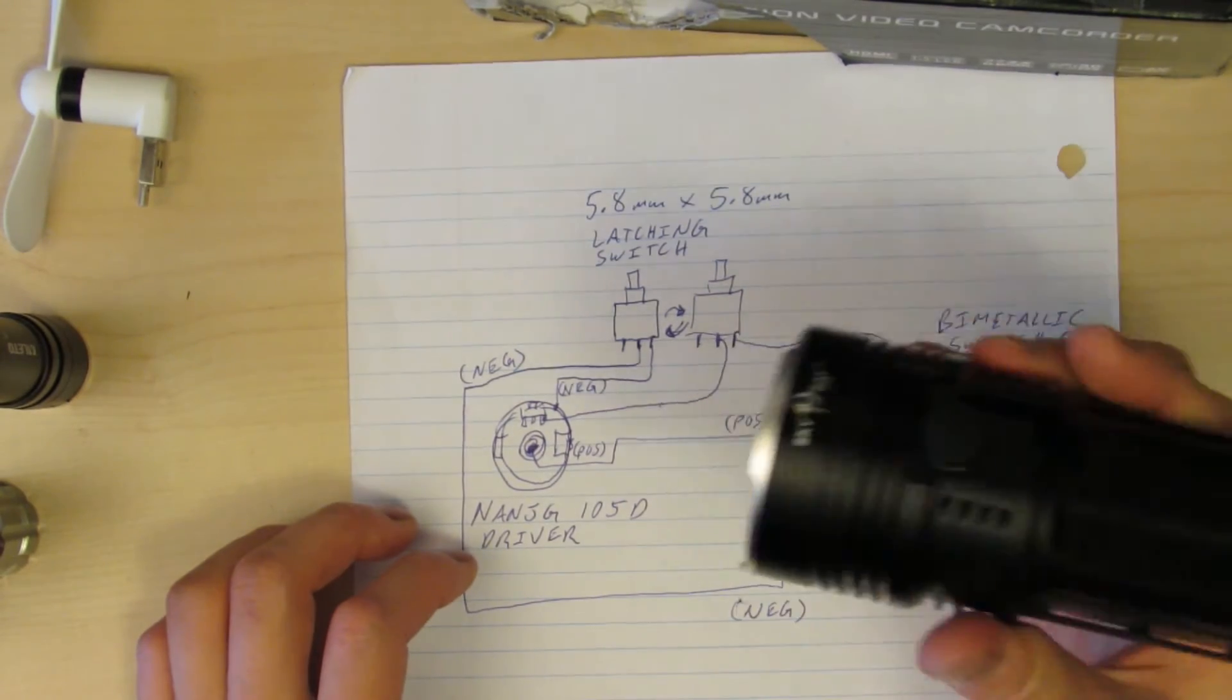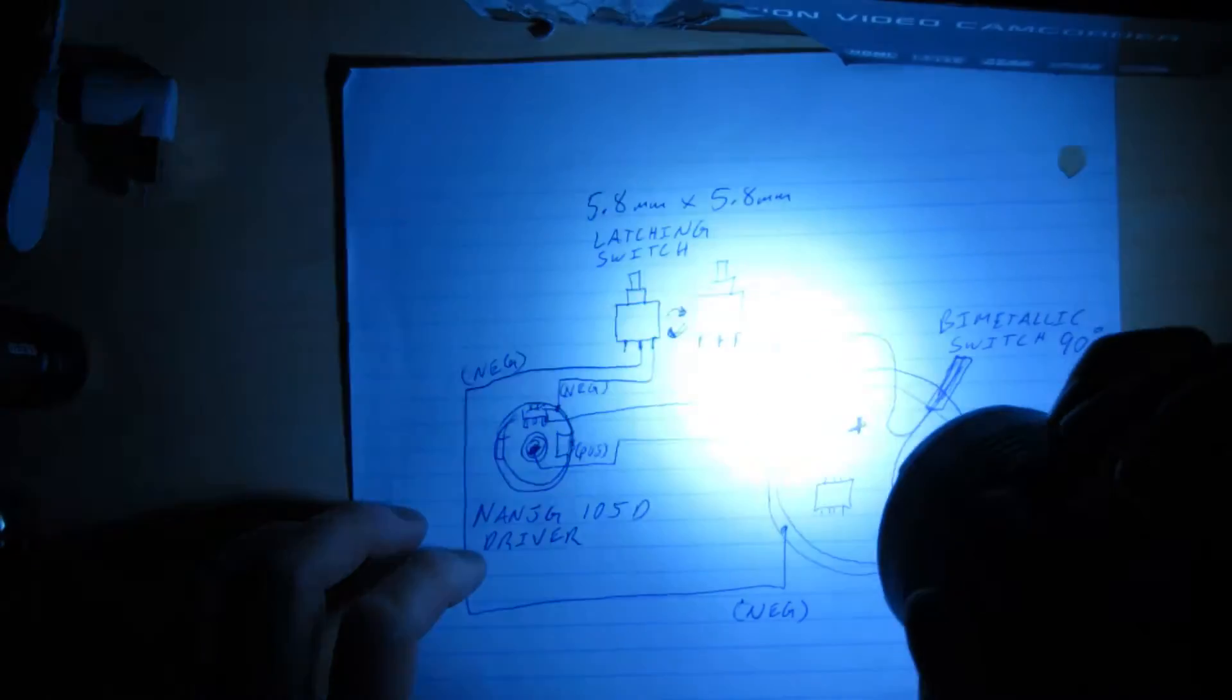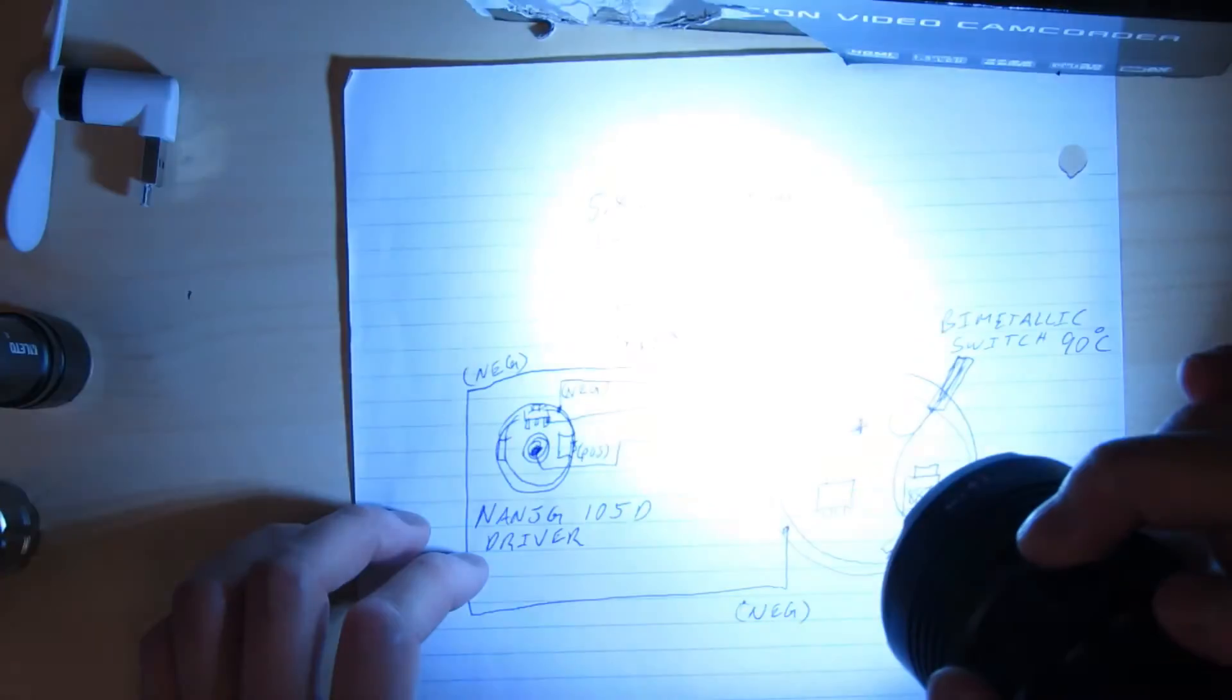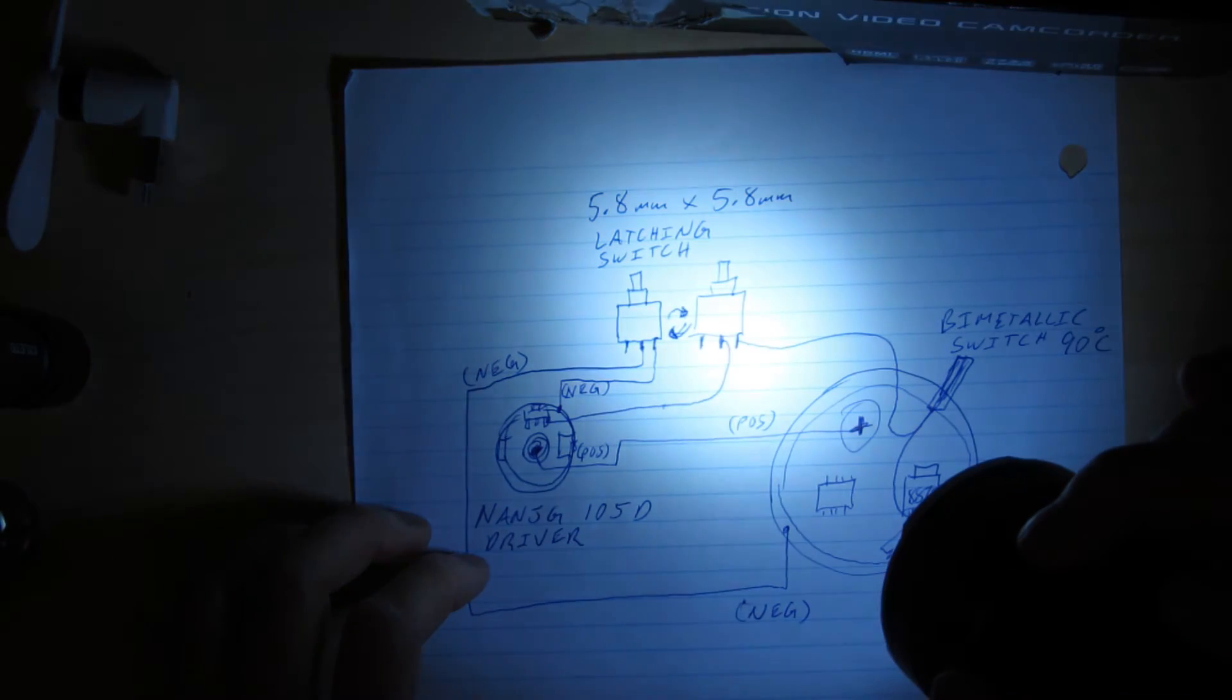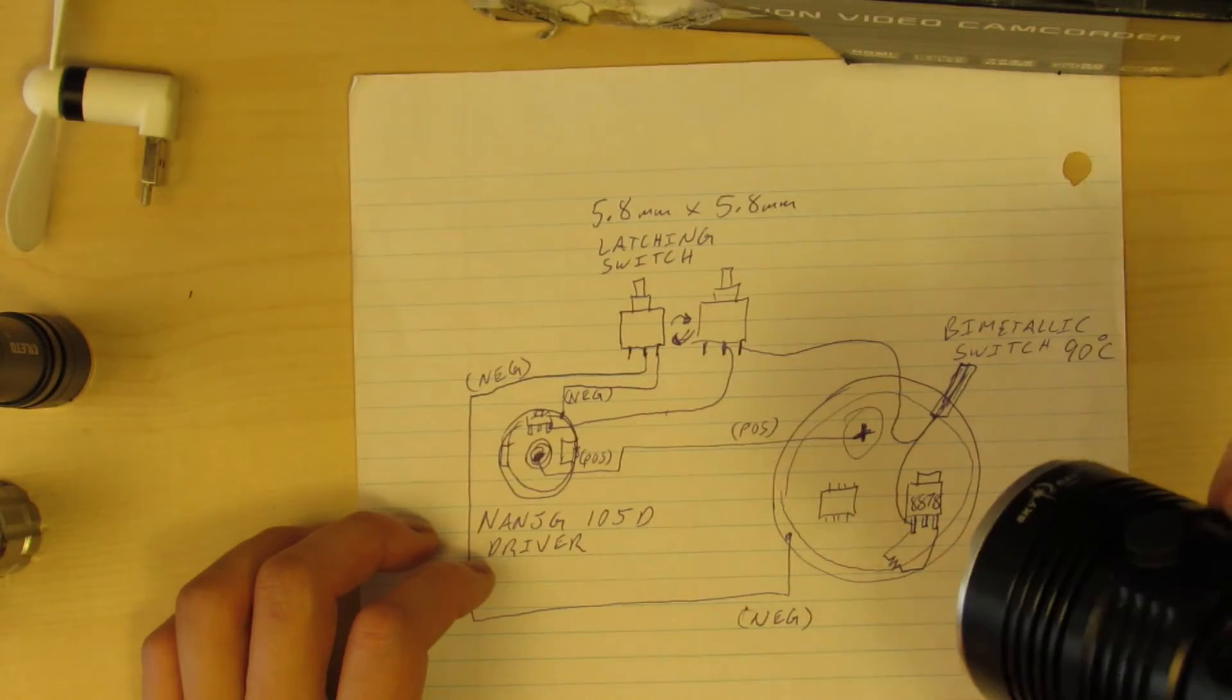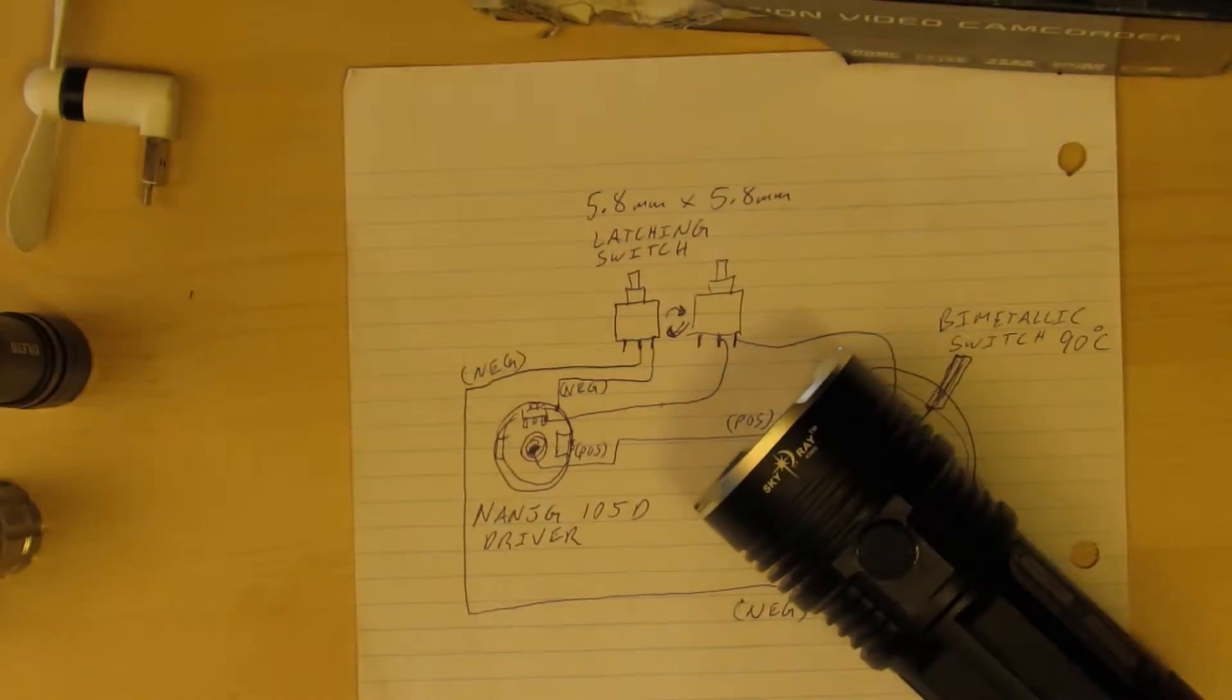Now the 105D is inside the Skyray King. We've got our latching switch, and we can get to high no problem. If you leave it in high, you can always come back to high. If you switch it to low, you stay on low for three seconds, and next time you come back on it'll be on low. When it blinks, you turn off the flashlight, and that's how you switch to your other mode which has strobe. So now you can strobe or you can SOS, which is good because if you do get lost, you can use this as a beacon.